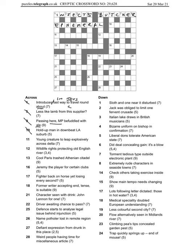10 across: hold up man in downbeat LA Atlas. This is in the words, the hold up man, it's the man who's holding up the whole world in mythology, it's Atlas. Then 11 across: young creature to leap explosively, so anagram of to leap across Delta going around day for Delta. The young creature is going to be a TADPOLE.